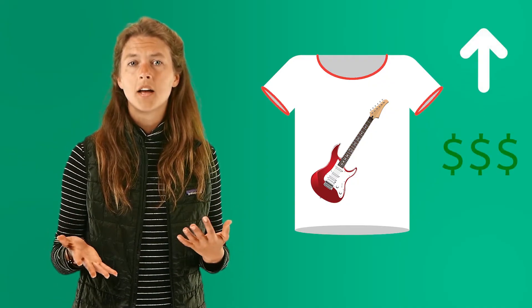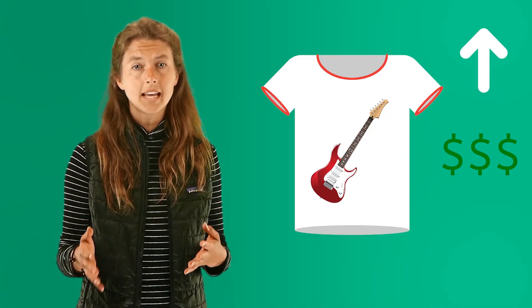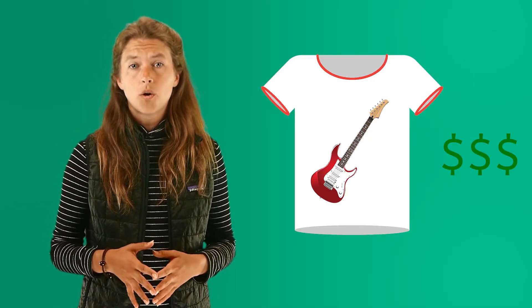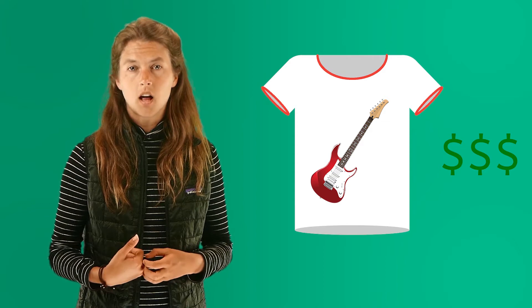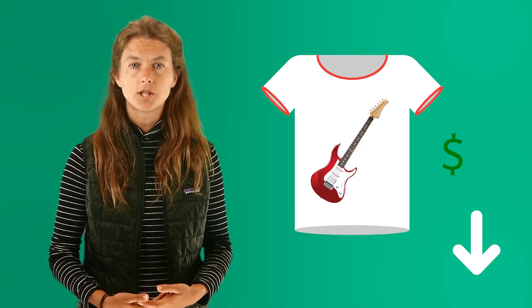Demand for an item can really affect how that item is priced. For example, the latest toy or music group t-shirt will be in really high demand. Everyone wants it and they want it now. That high demand can cause the producer to set the prices high because the producer knows the consumer will pay almost any amount to get that item. But if the toy or music group goes out of style and something else comes along, the demand may drop, and if that happens, the prices will drop too.